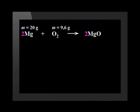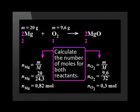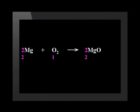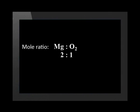Let us start by filling in the information given. We have 20 grams of magnesium and 9.6 grams of oxygen. Then we confirm that the equation is balanced and fill in the mole ratio. Let us then calculate the number of moles of each of the reactants using the equation n = m / M. Now we need to compare the mole ratio of the two substances using the balanced equation. The ratio of magnesium to oxygen is 2 to 1. This means that for every two moles of magnesium that reacts, one mole of oxygen will be required.